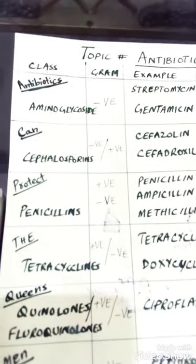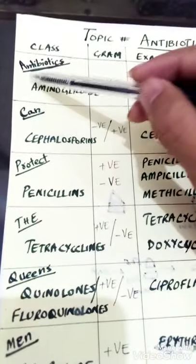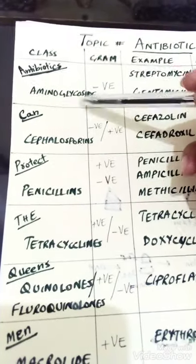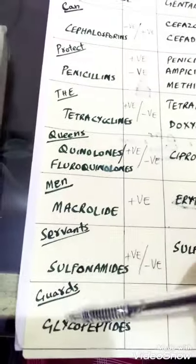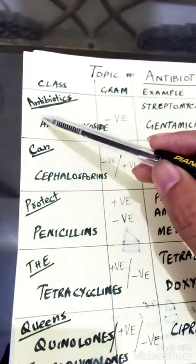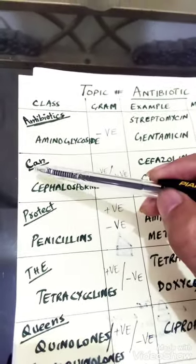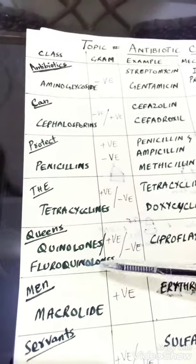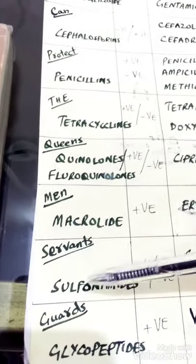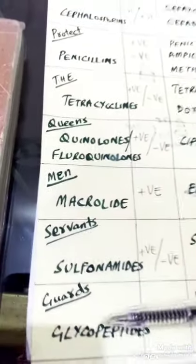There are eight classes of antibiotics. First, you have to learn the mnemonic — the code words to remember their names. Antibiotics can protect the Queens, men, servants, and guards: A for aminoglycoside, C for cephalosporins, P for penicillin, T for tetracyclines, Q for quinolones and fluoroquinolones, M for macrolides, S for sulfonamides, and G for glycopeptides.